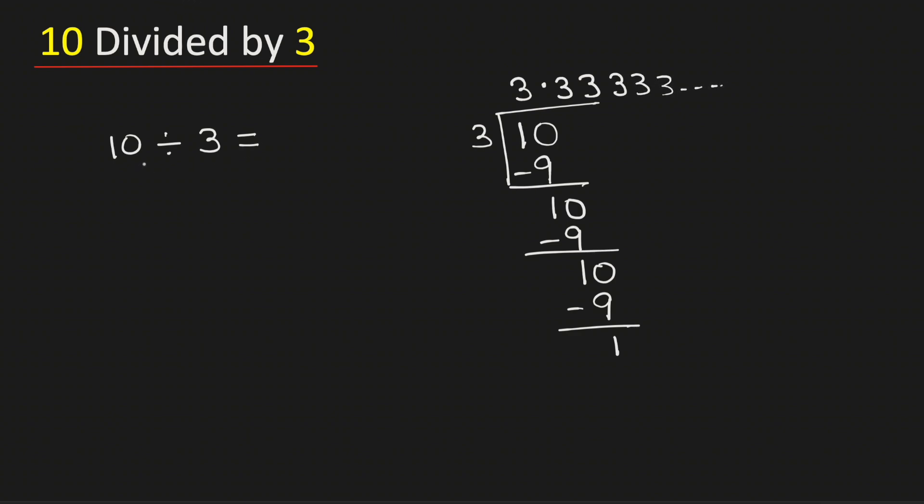Therefore we can say that 10 divided by 3 is equal to 3.333 and so on. And this can be written as 3.3 bar. And this is our final answer. Thank you for watching.